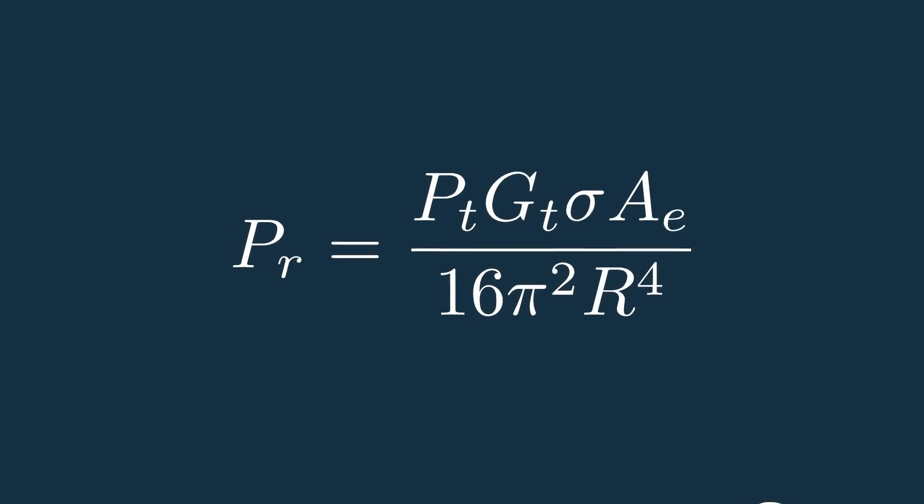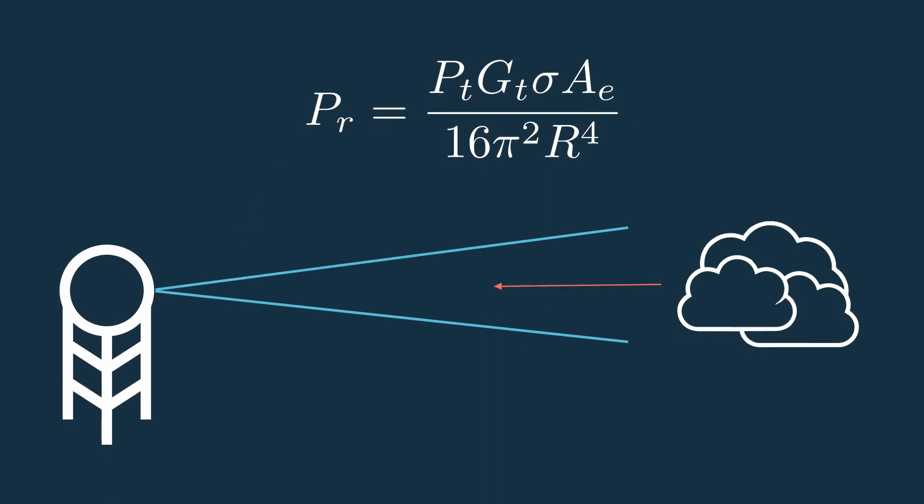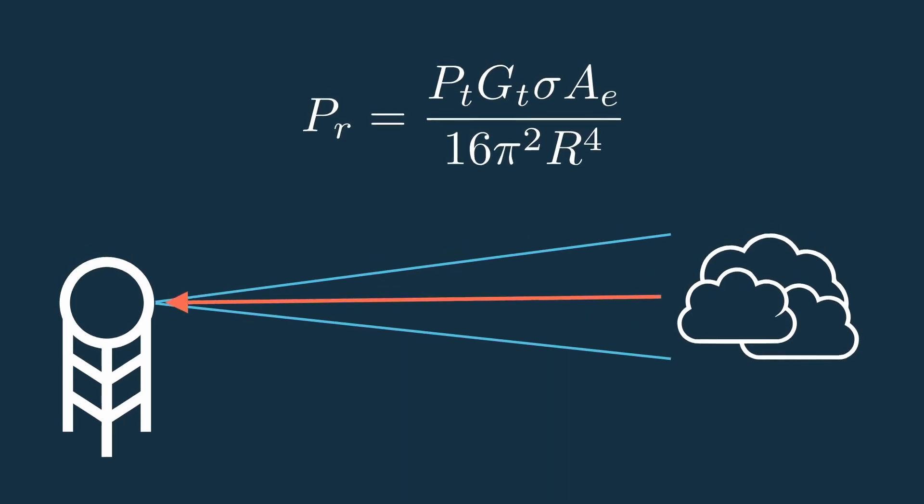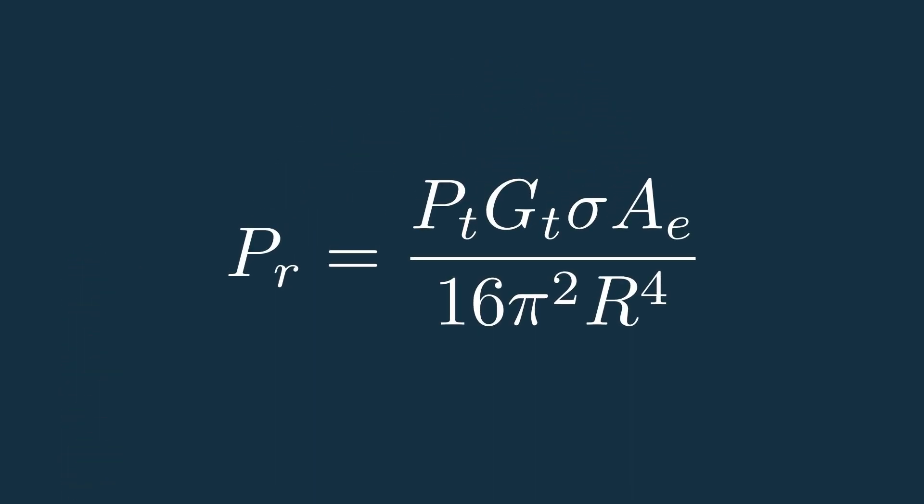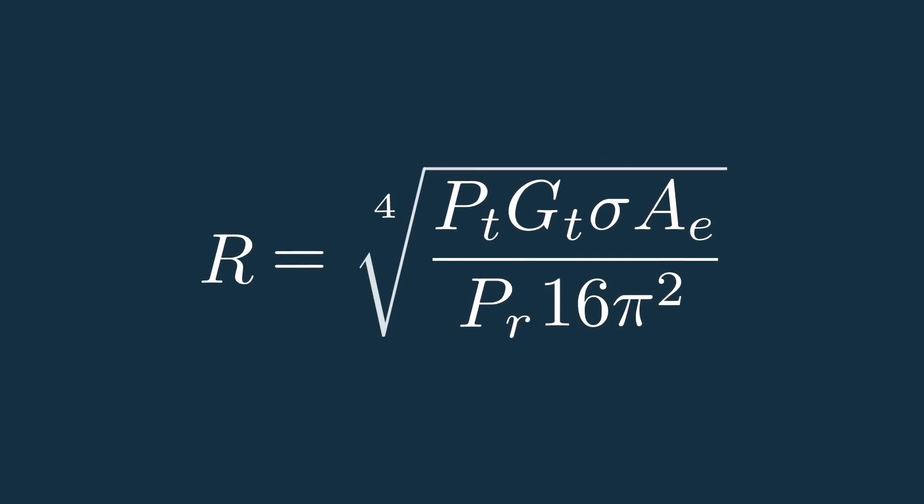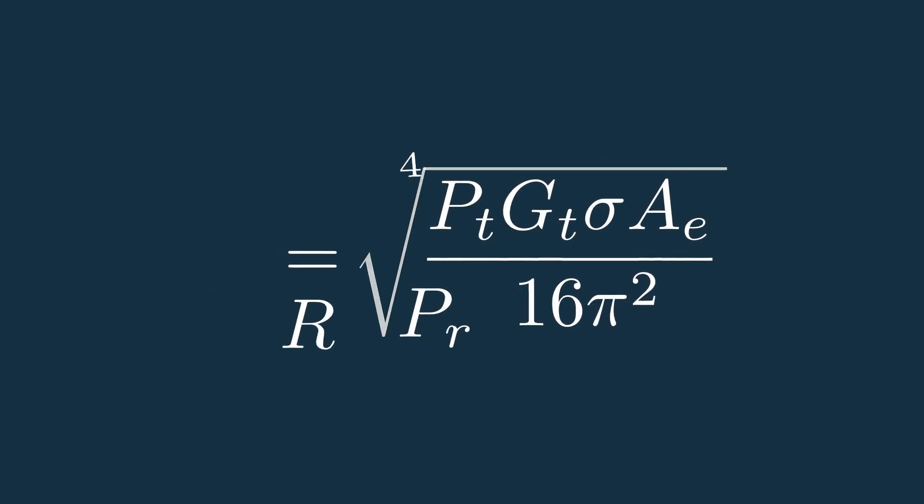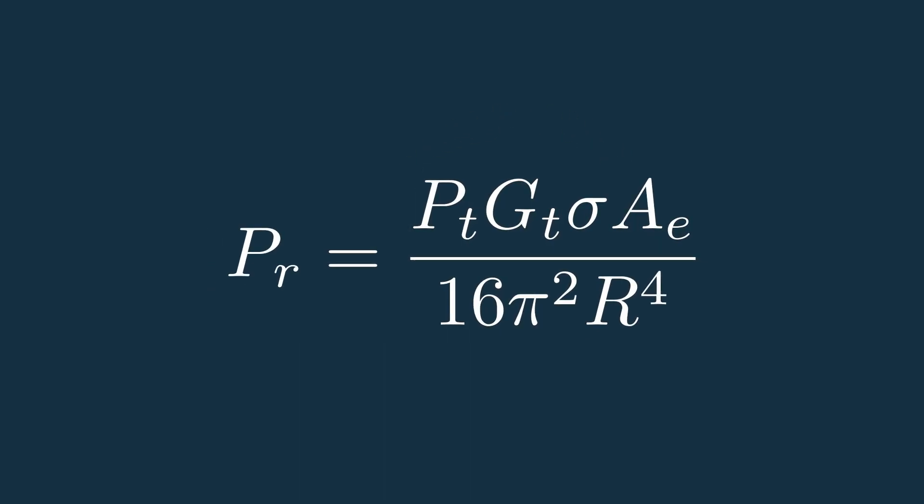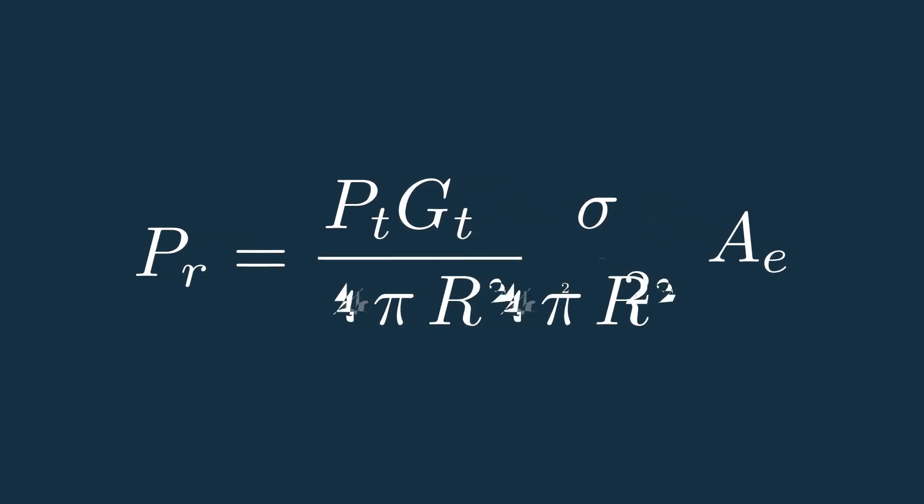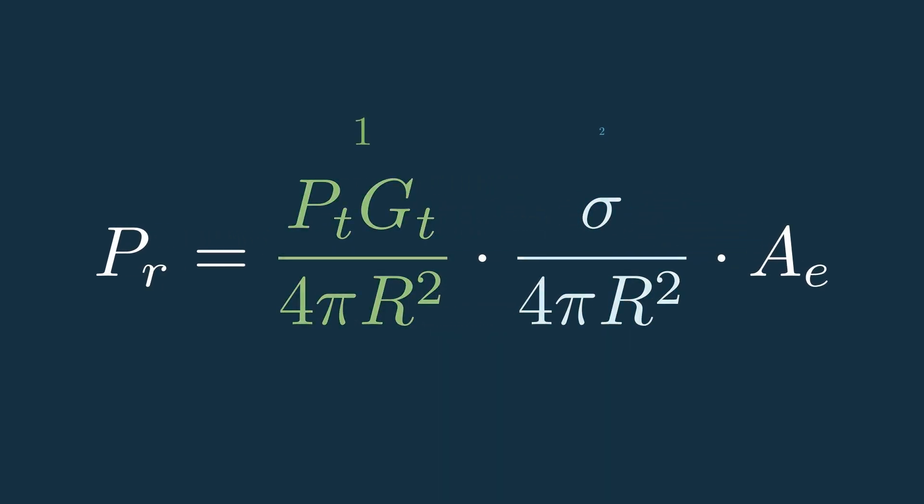This is the radar equation, or really it's the amount of power a radar receives given some system parameters like transmit power and a target. But you could also rearrange this in different ways to find the range or other terms. This is an incredibly important equation and you'll see it all the time when working with radar, so to understand it, let's break this mess of symbols down into a few components.